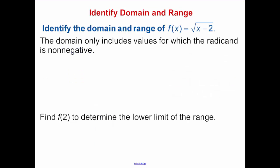So our range is y is greater than or equal to 0. Okay, identify the domain and range. The domain includes values for which our radicand, which is a fancy way of saying the piece underneath our radical, is non-negative. Meaning x minus 2 has to be greater than or equal to 0. So x has to be greater than or equal to 2. So that's our domain.